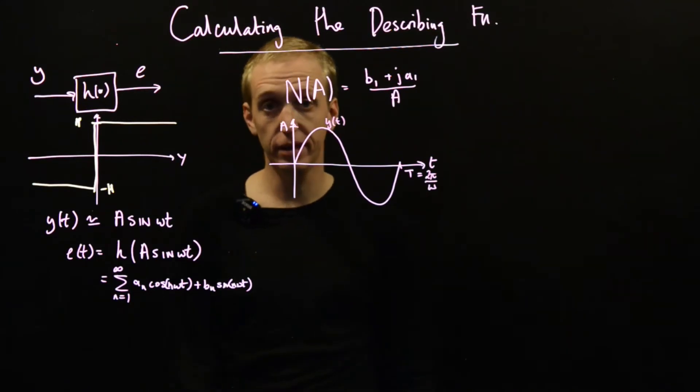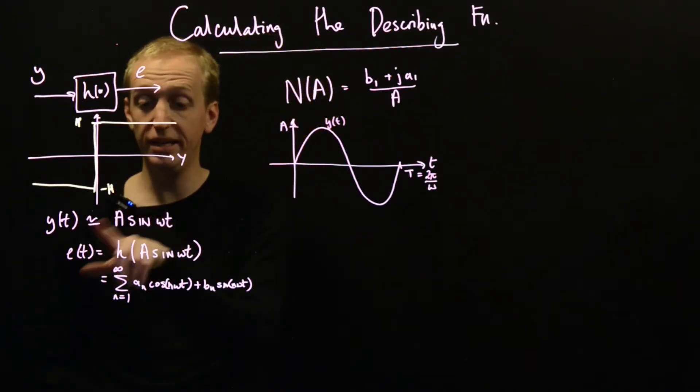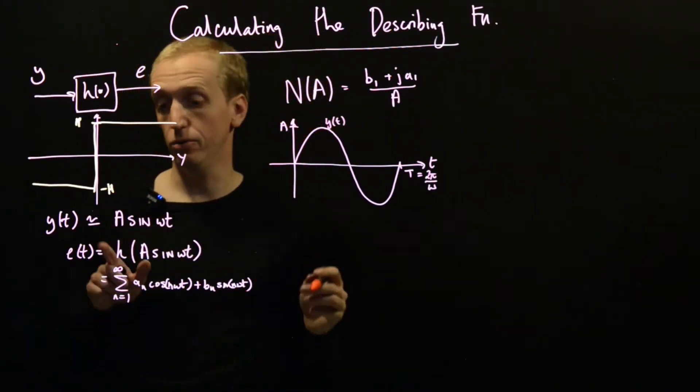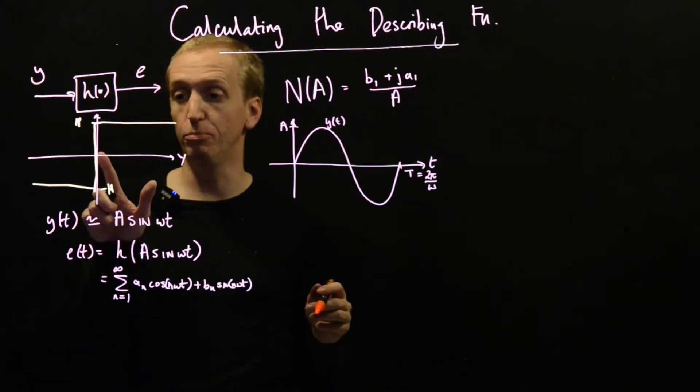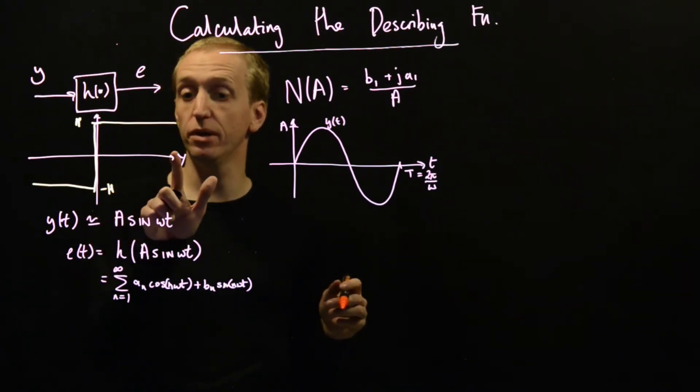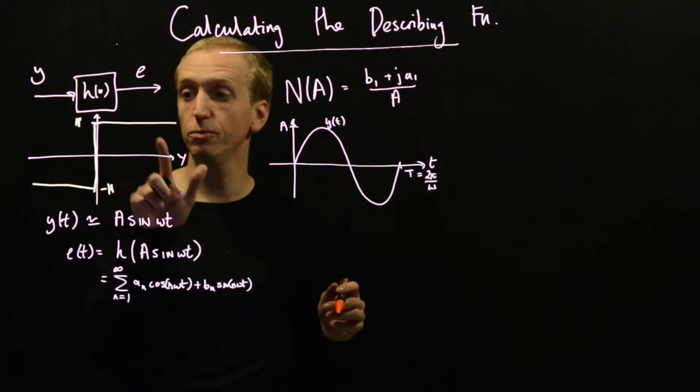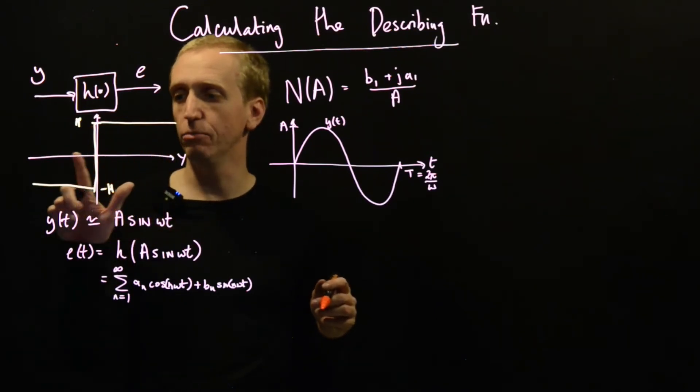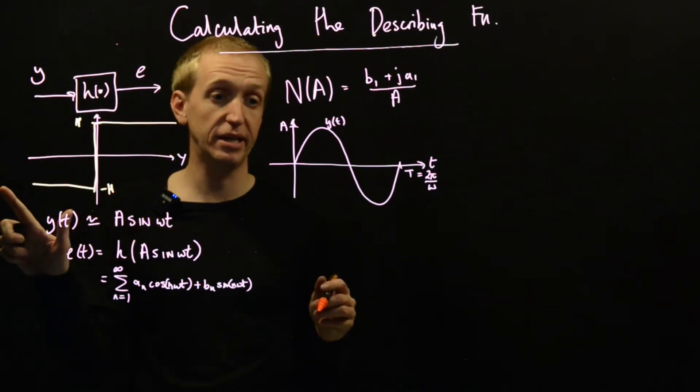And now onto our picture, let's just draw on what e(t) is equal to. And now what we said was that if we input something positive into our relay function, we get out h. We input something negative, we get out minus h.